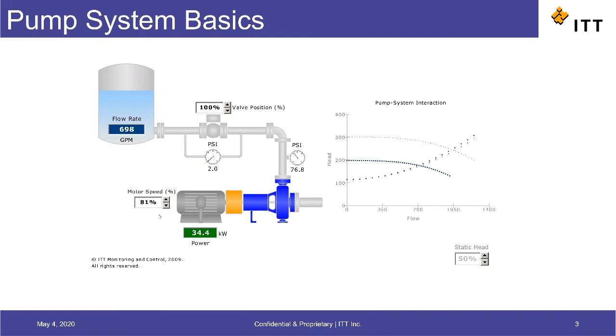The flow result is the same as before, 700 gallons per minute, but with a few key differences. One, if you notice our power consumption at the motor has gone way down because it's running at a slower speed.